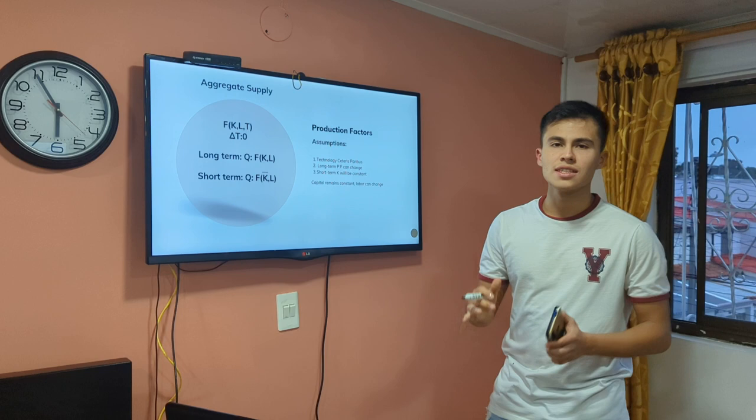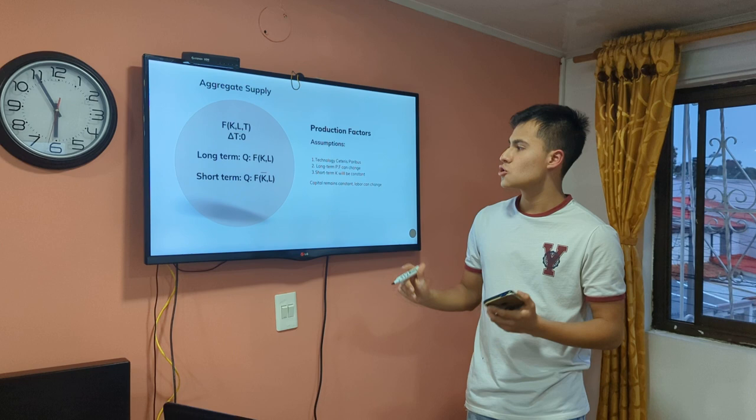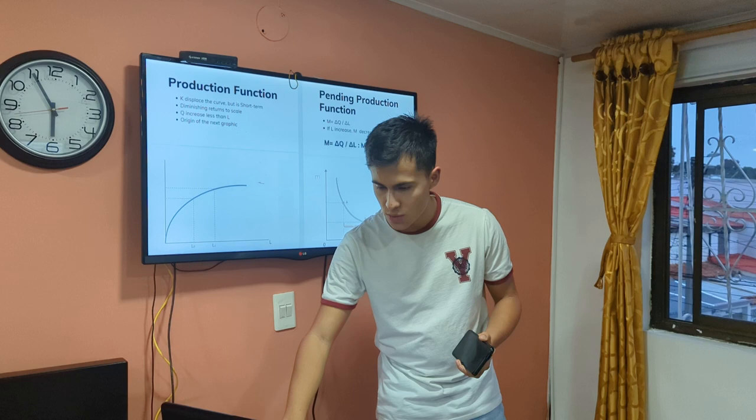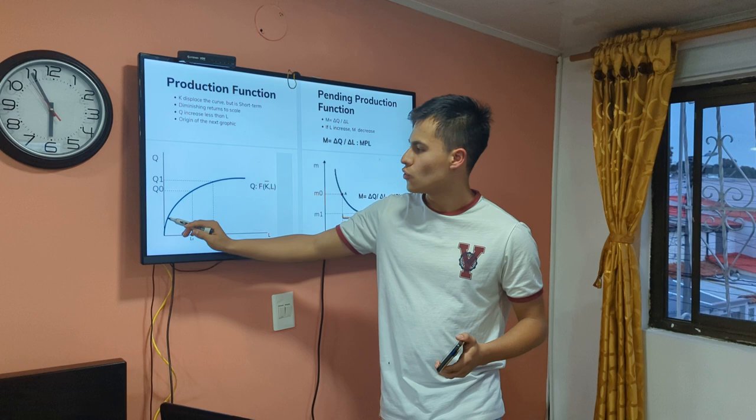In macroeconomics, we focus on what happens in the short term — the conjunctural time. So we are going to examine what happens when capital is constant. In the production function graphic, if we take capital as a constant, we can only move along the curve and observe what happens as labor increases.